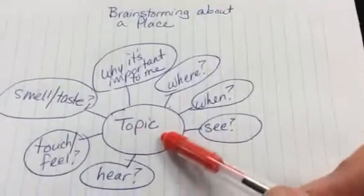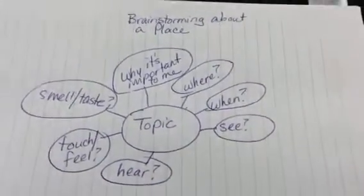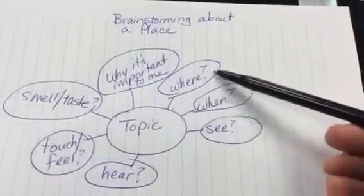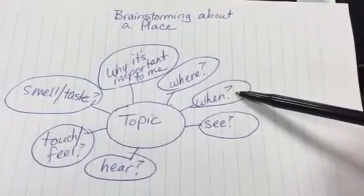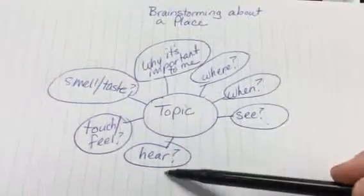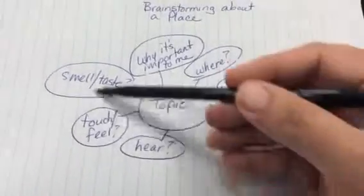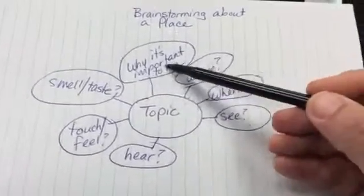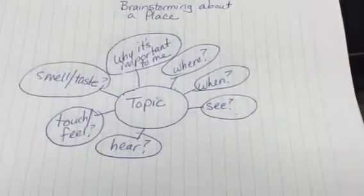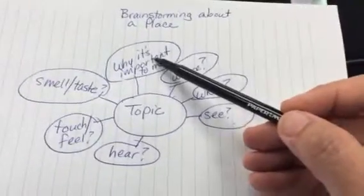One of the things that's important of course is the topic which you put in the center when you're brainstorming. Where this place is, when you might have been there, what you see, what you hear, touch, feel, smell, and taste. This all gives you that imagery and then why it's important to you. That's extremely important because that's why you're writing about it.